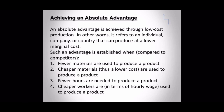Such an advantage is established compared to competitors when: fewer materials are used to produce the product, cheaper materials are used, fewer hours are needed to produce the product, or cheaper workers in terms of hourly wage are used. So we will realize we have an absolute advantage when, compared to the other country, we need less material, cheaper material, fewer hours, and lower overall cost to produce the same good — meaning our overall efficiency in producing that good is much higher.